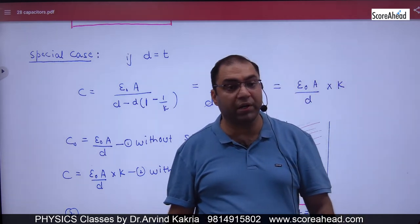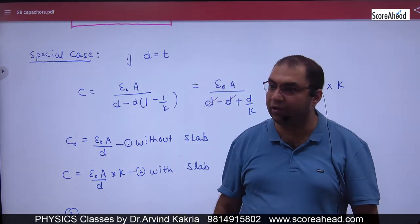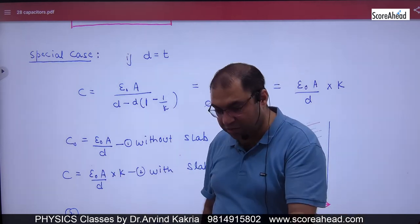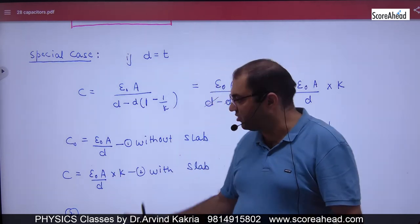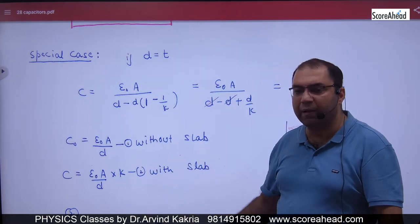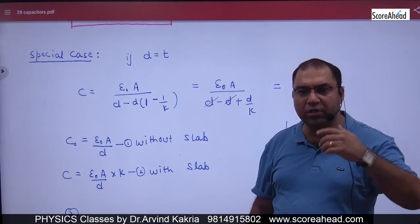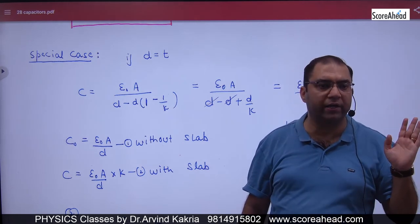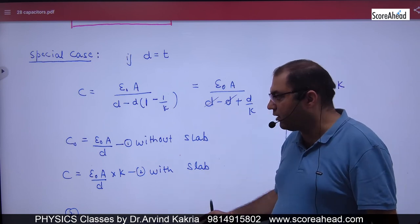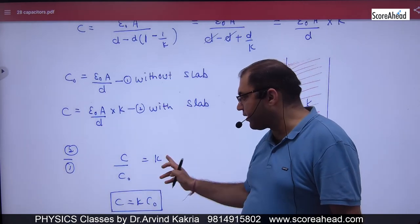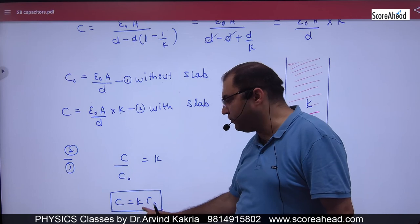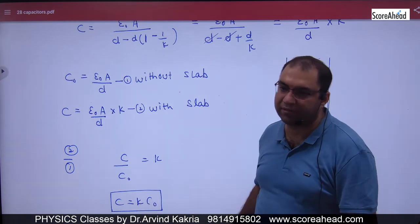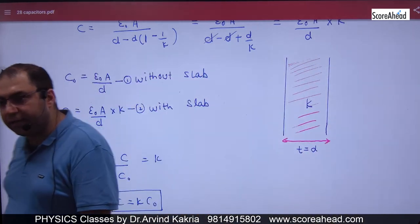You have such a material with dielectric constant 1,000. It will be 1,000 times more capacity. That's the best way. Fill the plates with the dielectric constant K. If you do this, your new capacitance will become K times without the slab. Is this point clear?